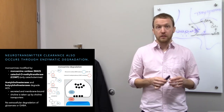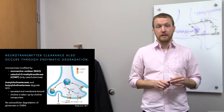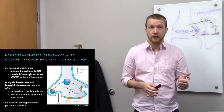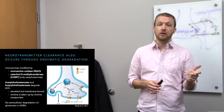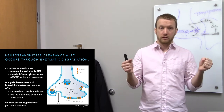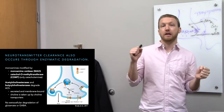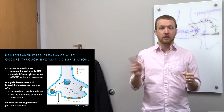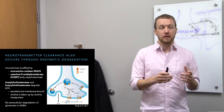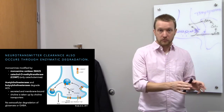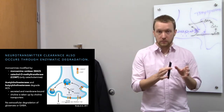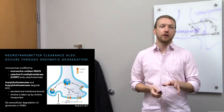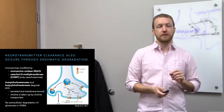For acetylcholine the only way we regulate it is through degradation. Acetylcholinesterase or butyrylcholinesterase break apart that acetate and choline. The choline is then taken back up, but we don't have acetylcholine transporters, and we also don't have GABA, glutamate, and glycine degrading enzymes. So for those, only reuptake.